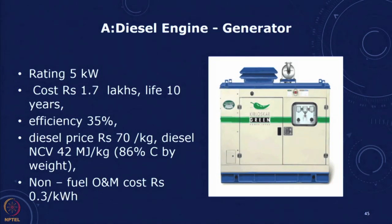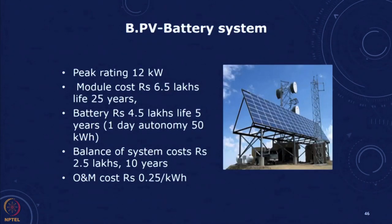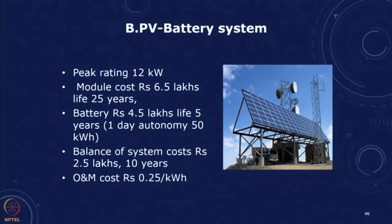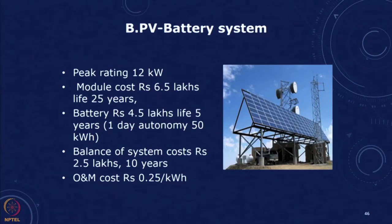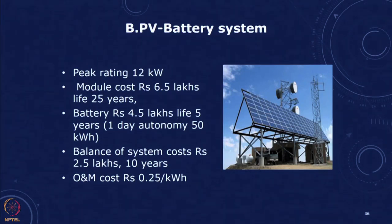For Option B — a PV battery system — the peak rating of the PV system is 12 kW, even though we need an average of 2 kW. This is because we use 2 kW on average for 24 hours but solar generation is only available during sunshine hours, which is why the higher panel rating is required.